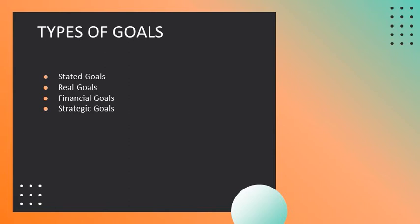Goals are desired outcomes or targets of management planning. Types of goals include: stated goals, which are written in official statements of the organization; real goals, which are actually pursued and defined by actions of members; financial goals, related to financial performance; and strategic goals, related to all areas of organizational performance, especially competitors.